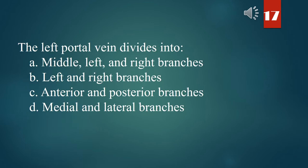The left portal vein divides into: A. Middle, left, and right branches. B. Left and right branches. C. Anterior and posterior branches. D. Medial and lateral branches. The answer is D. Medial and lateral branches.